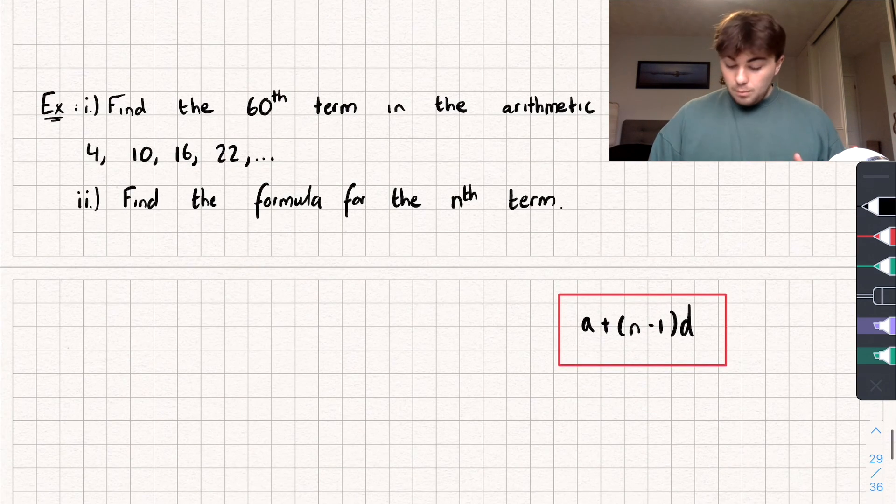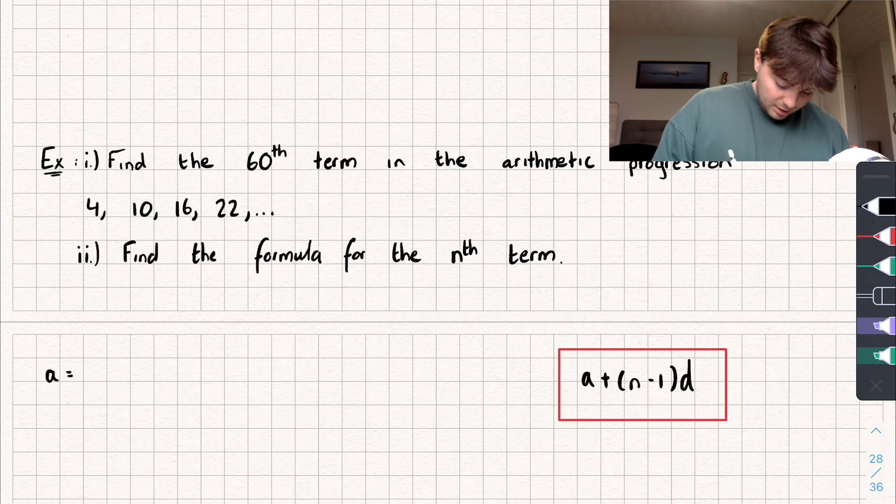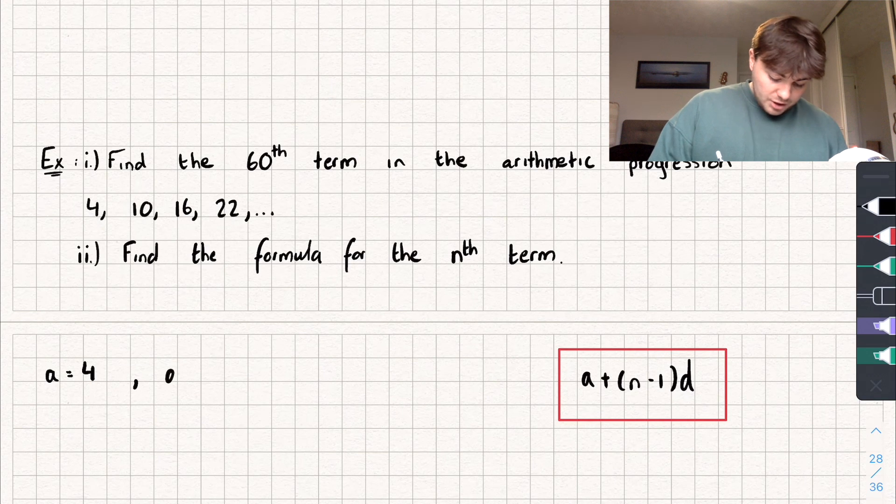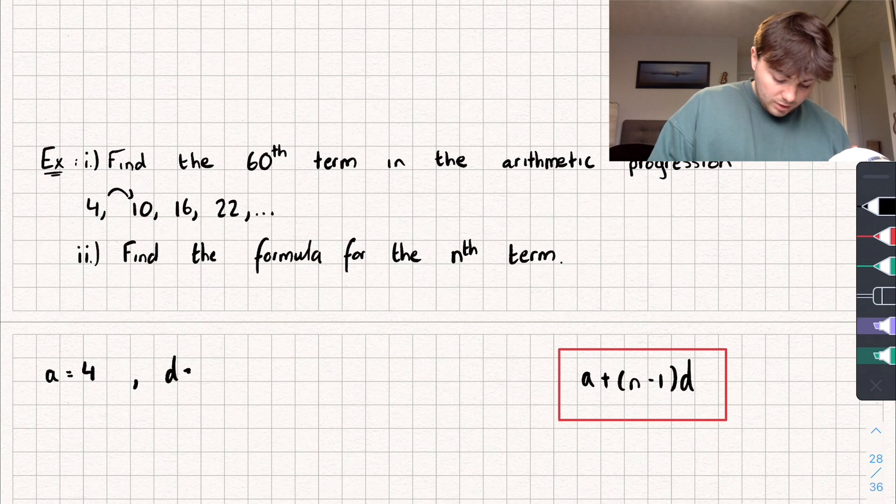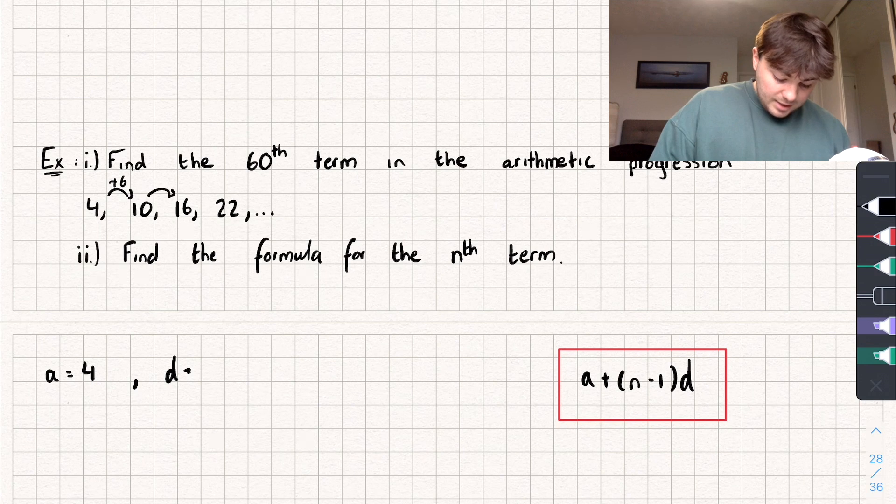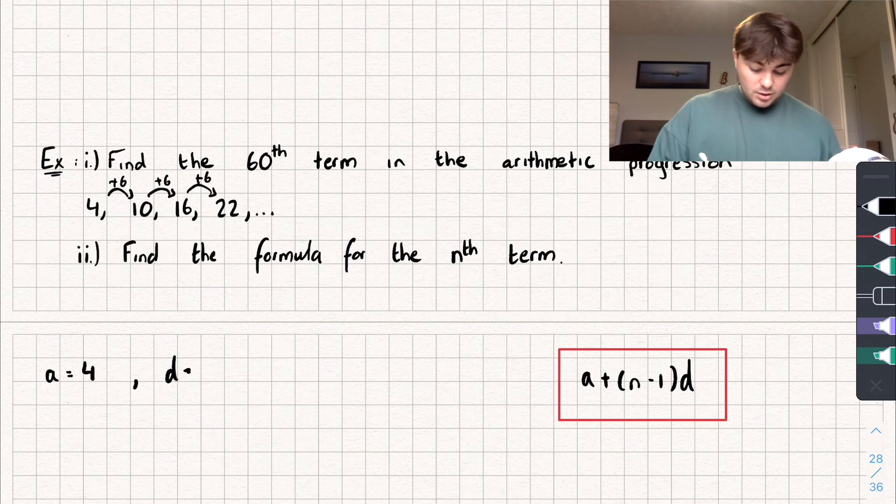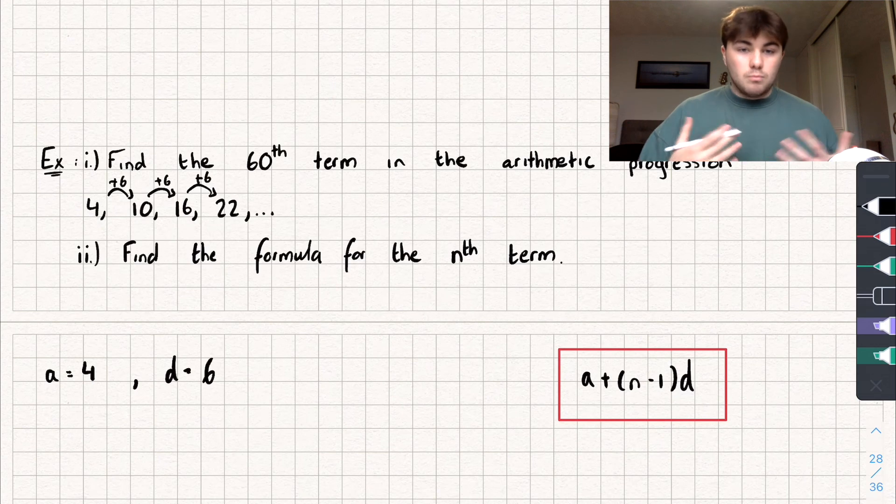So the nth term is going to be given by what is in that red box there. Okay, so we know the first term of the sequence a is going to be equal to 4. And the common difference d, well how much is this sequence increasing by each time? Well, 4 to 10, that's going to be, let's write it up here, plus 6. 10 to 16 plus 6, and 16 to 22 plus 6. So our common difference is 6. Okay, and because we were told this was an arithmetic progression, we only really needed to check once.